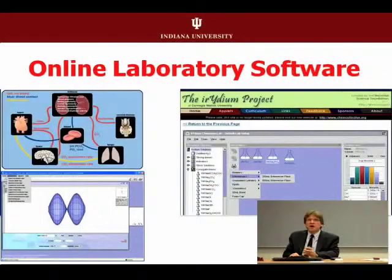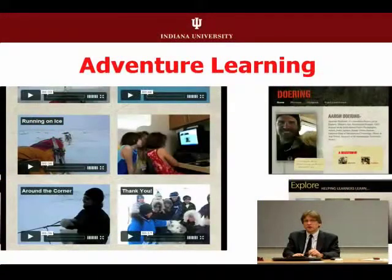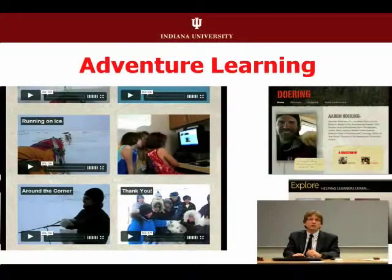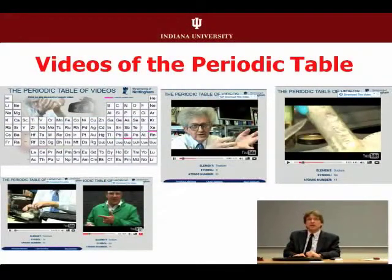Chemistry on the web. Mathematics on the web. Healthcare — to flowchart kinds of things, just to show visually a chemical experiment so you don't blow up your lab. Or adventure learning to the Arctic tundra or to the rainforests and bringing that in live for kids in schools. Or from the University of Nottingham in the UK, a periodic table of visual elements so you can see experiments with sodium or iron or whatever.